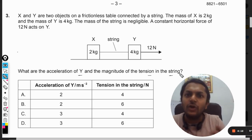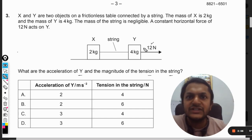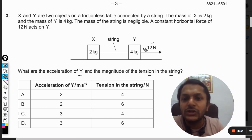If Y is moving with certain acceleration, let's say a, definitely X is also moving with the same acceleration because they are tied with a string. Both of the masses are connected with each other and both will be moving together. So the total mass will be 6 kgs. This 12 newton is the total force which is giving motion to the total mass of 6 kg.